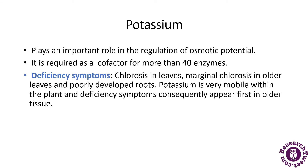Potassium plays a major role in the regulation of osmotic potential — the movement of molecules from higher to lower concentration. It is also required as a co-factor for more than 14 enzymes. If potassium is deficient, the plant shows chlorosis in the leaves, marginal chlorosis in older leaves, and poorly developed roots. Potassium is very mobile within the plant, so deficiency symptoms appear first in the older tissue.